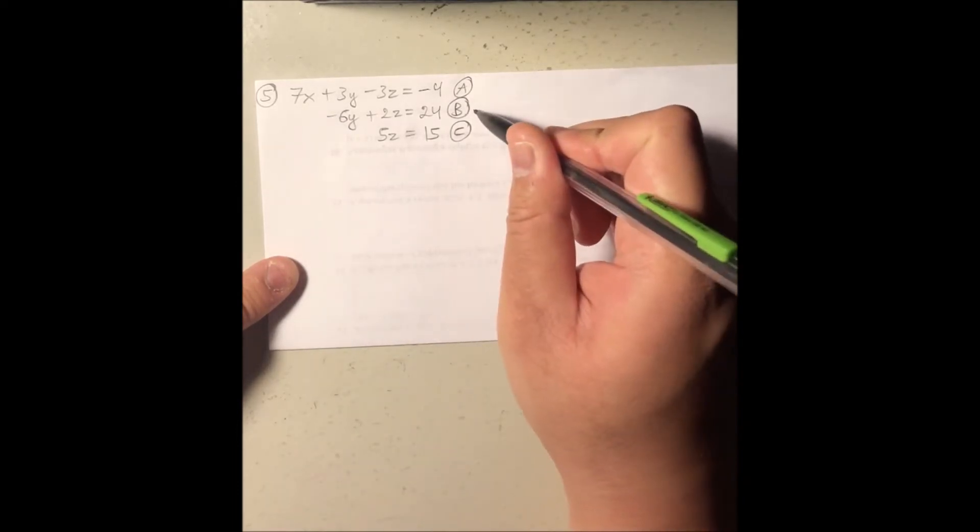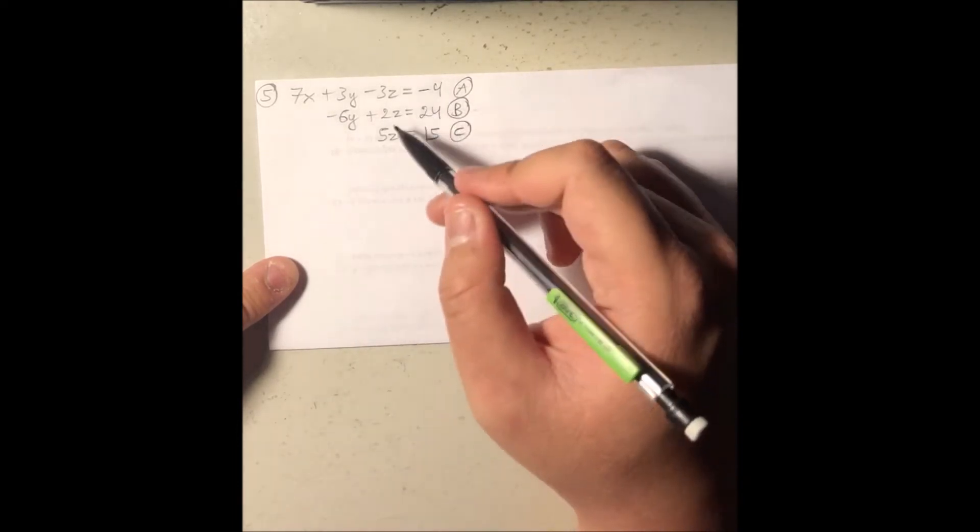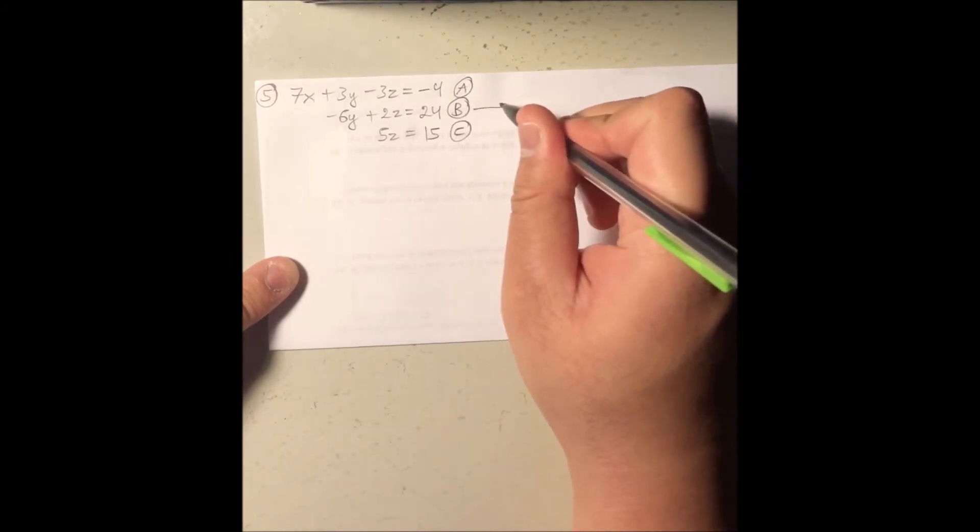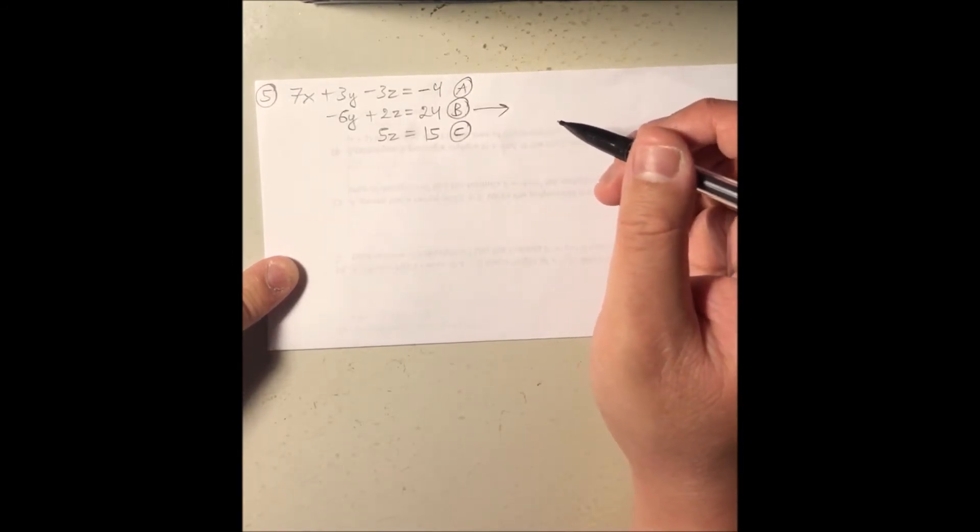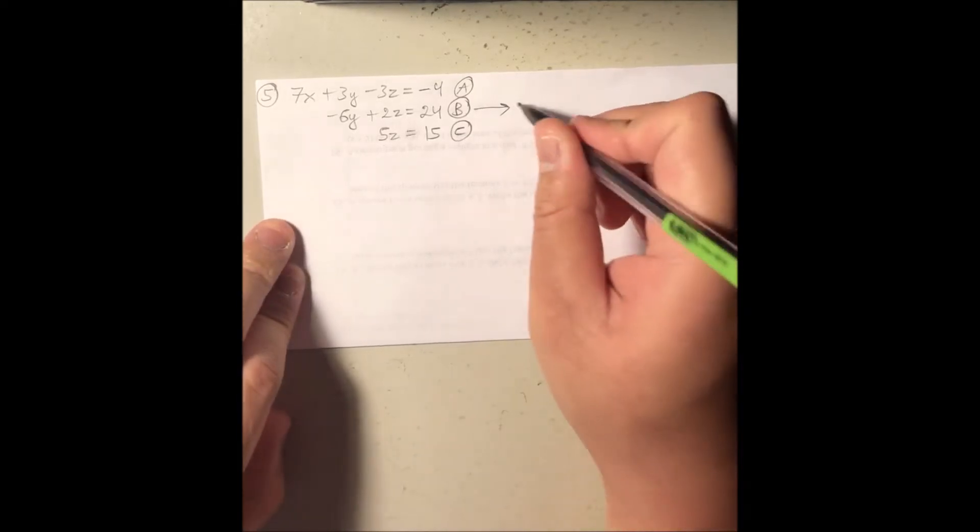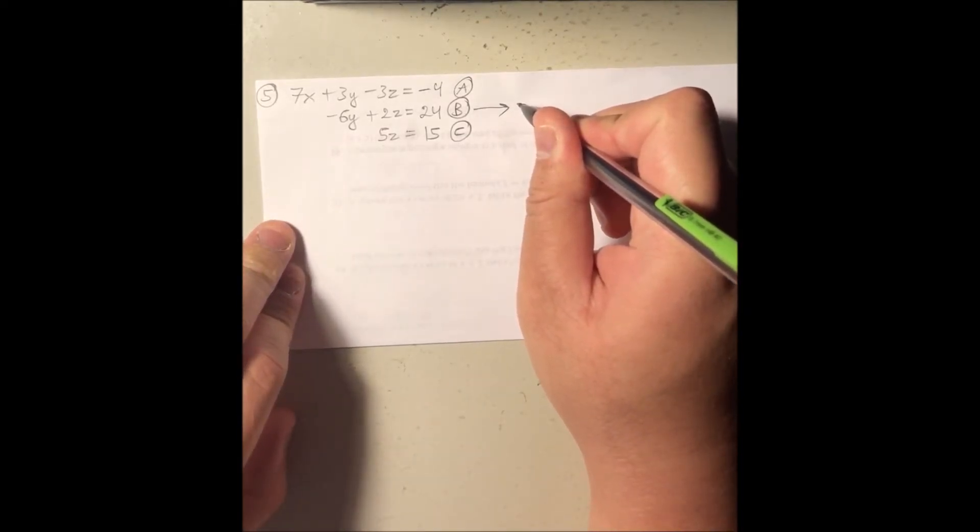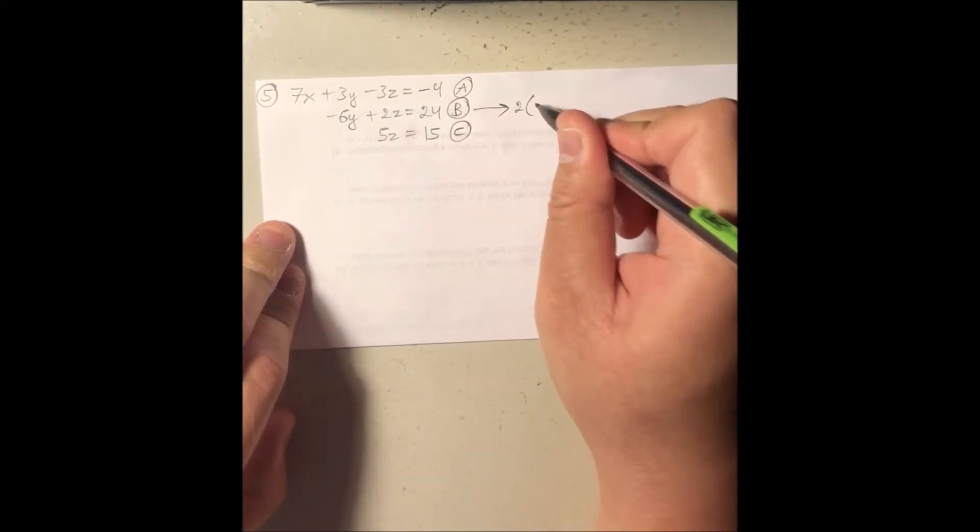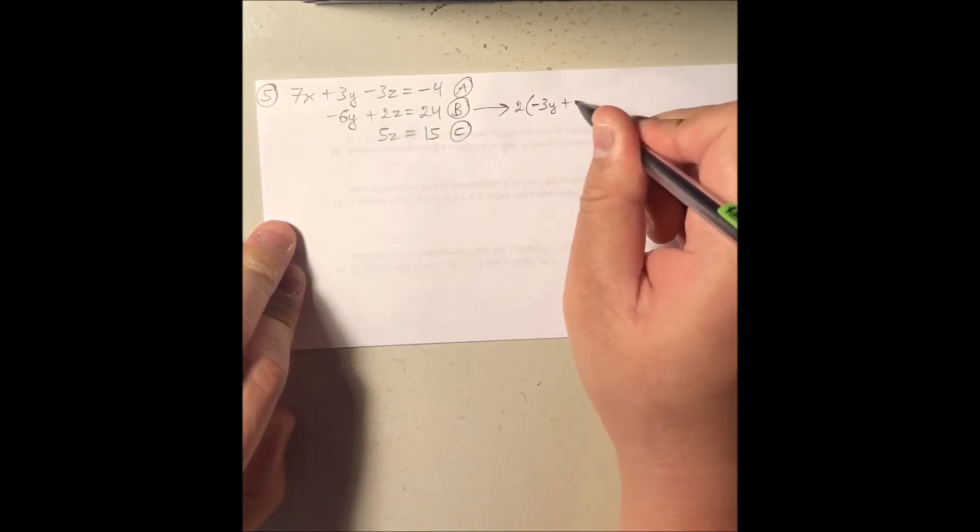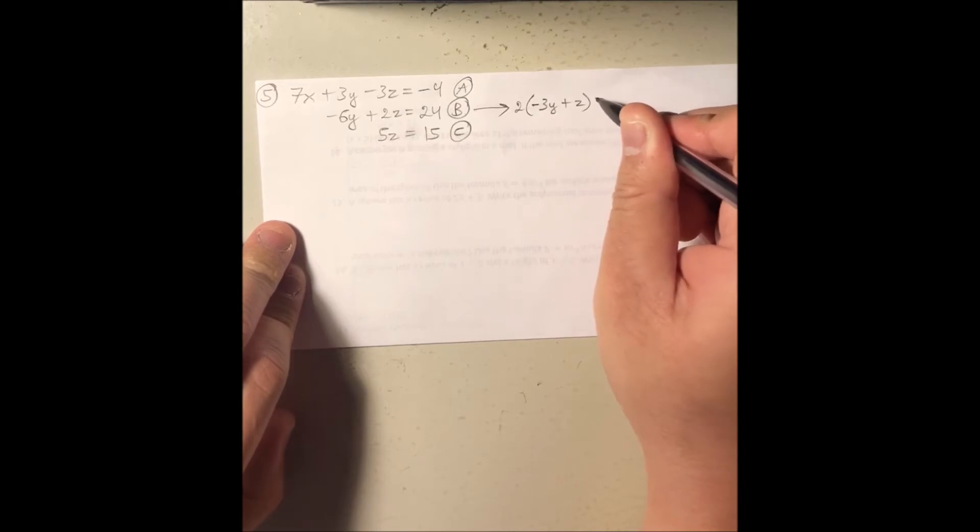But in this case, I'm gonna go ahead and do the optional step of factoring out the positive 2 in the B equation. So what is that one gonna lead me to? Well, that's gonna give me positive 2 multiply the leftover of negative 3y plus z, and it equal to 24.